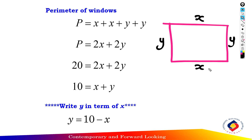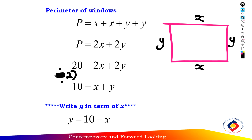First, draw the rectangle. The height of the window equals y meters and the width equals x meters. So the perimeter equals x plus x plus y plus y, which gives 2x plus 2y. Since the perimeter equals 20 meters, we have 2x plus 2y equals 20. Dividing by 2 gives 10 equals x plus y, so y equals 10 minus x.